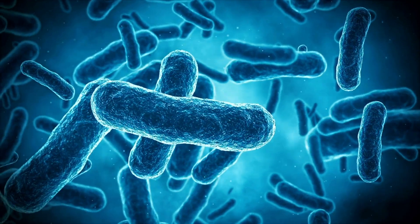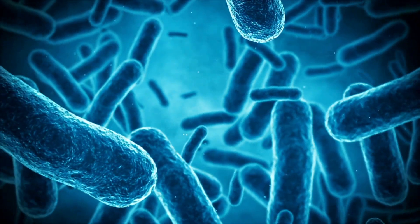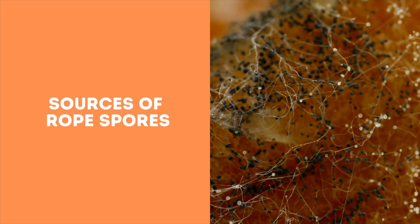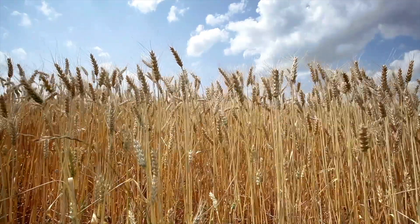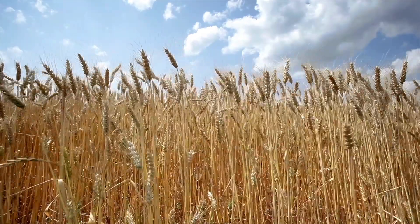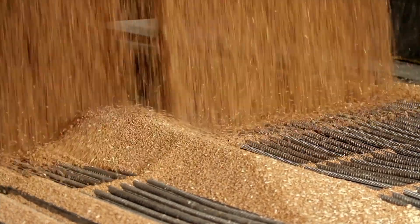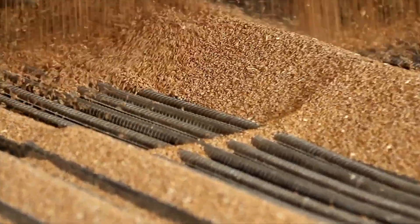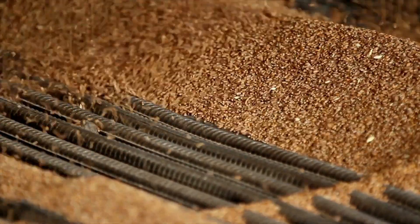The bacteria B. subtilis and B. mesentericus both occur naturally in the soil and can be easily carried along with agricultural commodities through the food supply chain, creating cross-contamination and spoilage issues at the manufacturing level. Flour, given its origin, post-harvest nature, milling process, and lack of kill steps, has the potential to introduce a greater number of rope spores per gram than any other ingredient. Whole wheat flour, which retains the outer layers of pericarp and is exposed to ambient and soil conditions, can introduce considerably higher microbial load into doughs. As a consequence, bakery products such as artisan wheat and whole wheat bread carry a higher risk of rope-related quality issues.